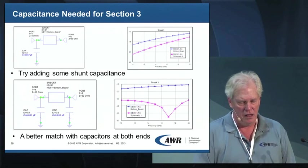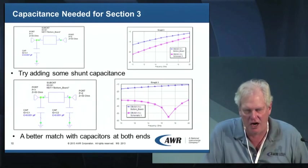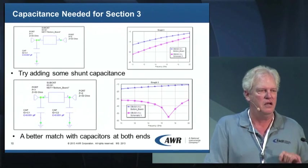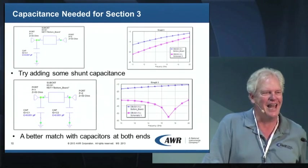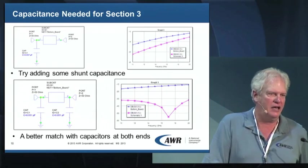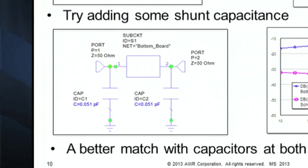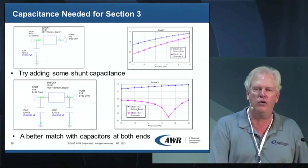The interesting thing is the values of those capacitors came out negative. They tried to improve performance by adding shunt capacitance, but it was actually better with negative capacitance — so we'd have to add a negative capacitor, which is ridiculous. What went wrong?